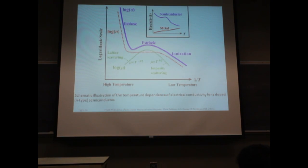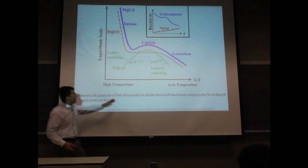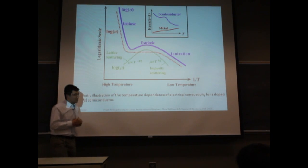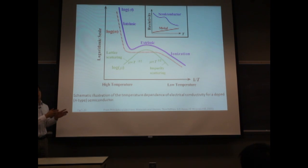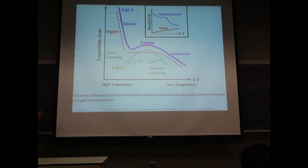This important curve describes how the carrier distribution, mobility, and resistivity change with temperature in a semiconductor. Mobility increases at low temperature and decreases at high temperature due to scattering. The carrier density increases at low temperature due to ionization, then becomes flat over a certain temperature range because the doping level remains constant. As temperature continues to increase, carrier density rises again due to thermal excitation of electrons from the valence band to the conduction band. Multiplying mobility and carrier density gives the conductivity as a function of temperature, described by the blue curve.